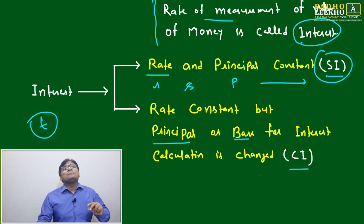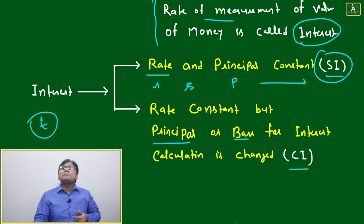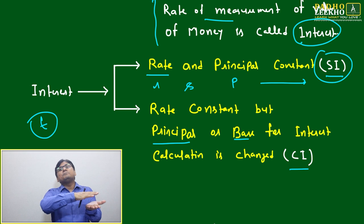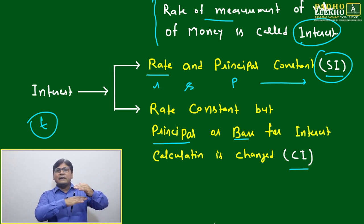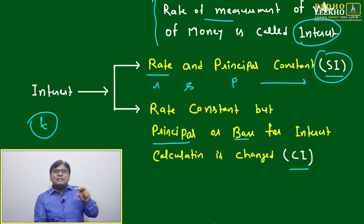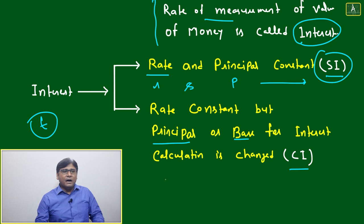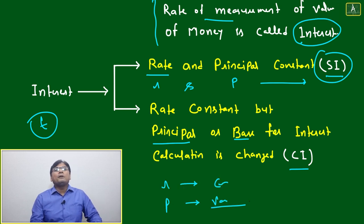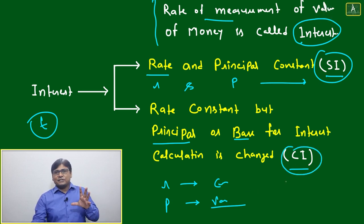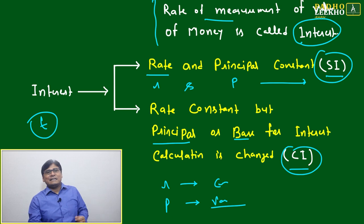If we introduce some complication where the rate is constant but the principal amount keeps changing, that gives us Compound Interest. How does the principal change? At the end of one year, the interest earned is added to the principal, making the new base for the next year different. The year after that, the base changes again. So in compound interest, P is variable while rate R remains constant.